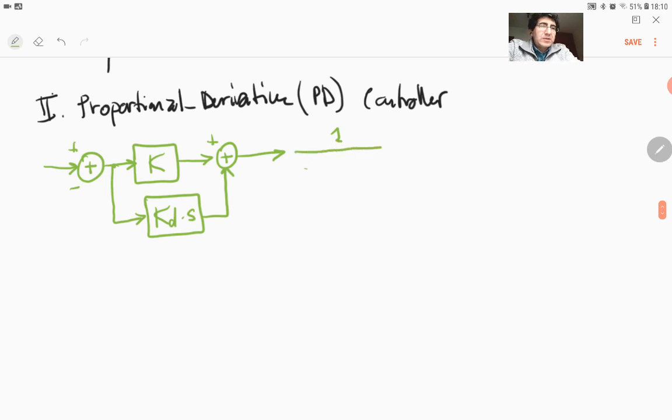So we will have S squared plus 10S plus 20 as our plant and our usual unity feedback from the output.